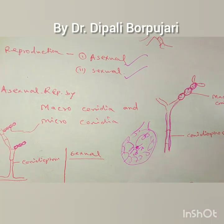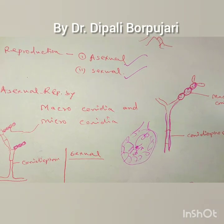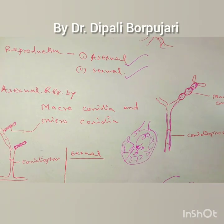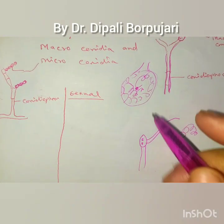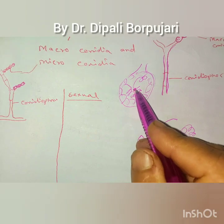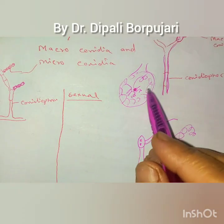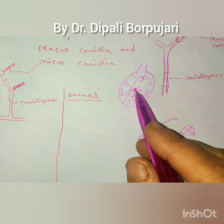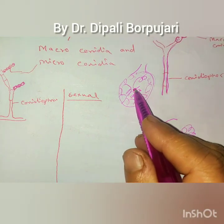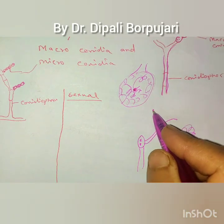The microconidium fertilizes the ascogonium. When the nucleus of the micro or macroconidium fuses with the nucleus of the ascogonium, it forms a dikaryotic structure.